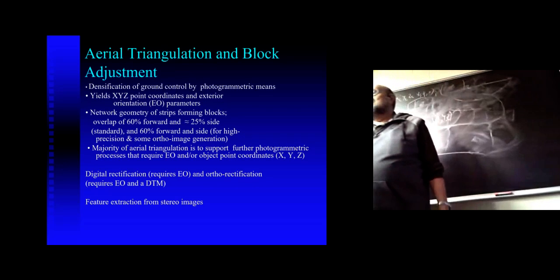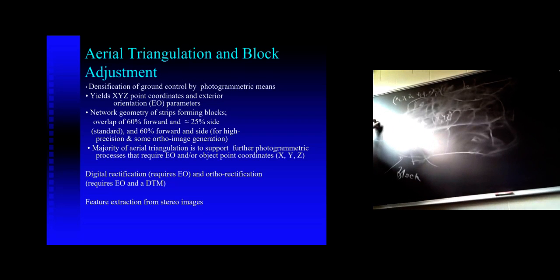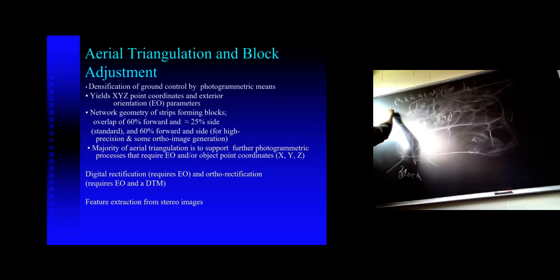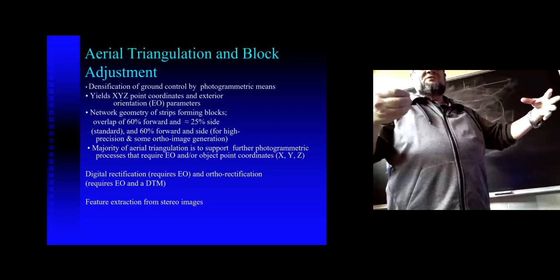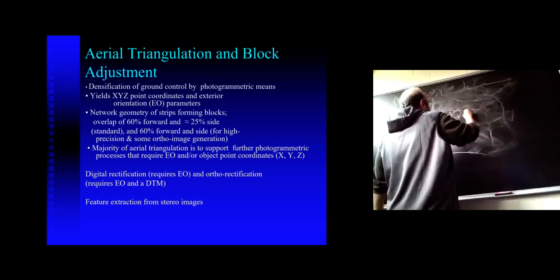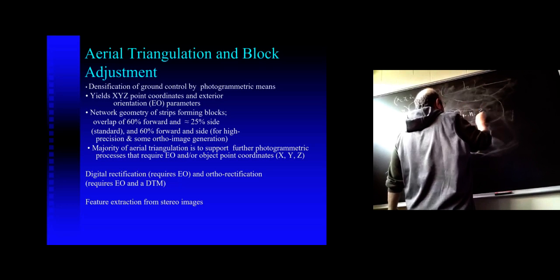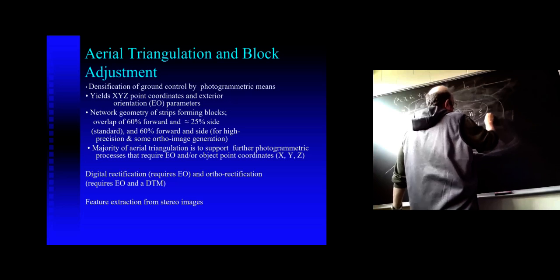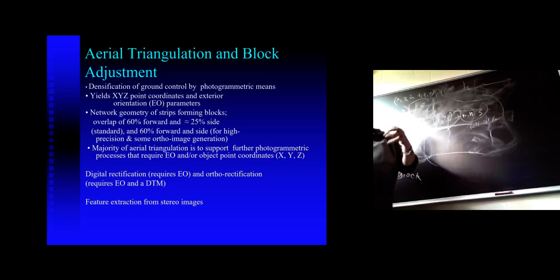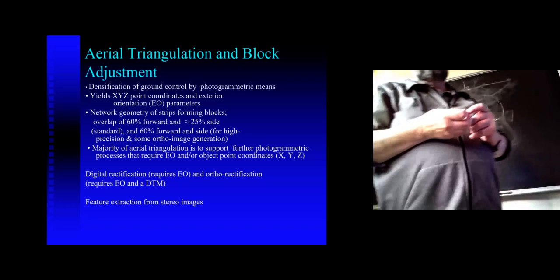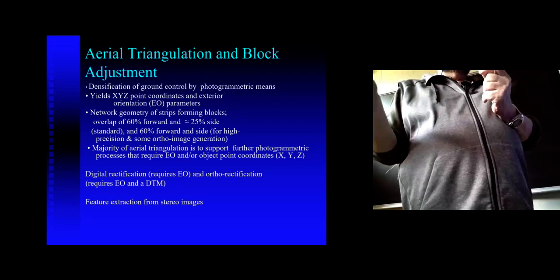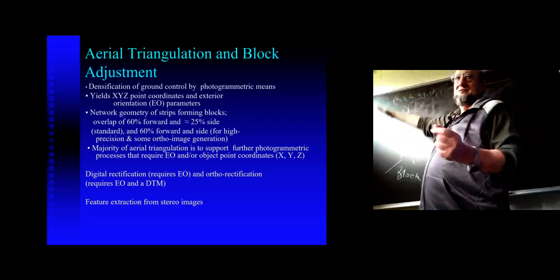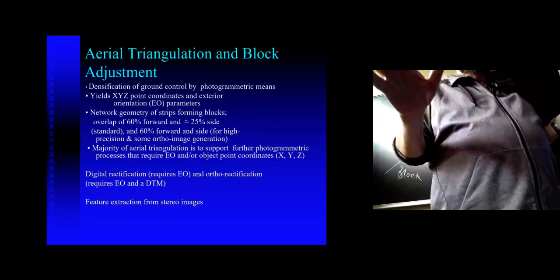There are also cases where you want to include interior orientation elements — f, x₀, y₀ — and this is called self-calibration. If you include these parameters, you add m × n × 3 more unknowns. You also make corrections to the elements of exterior orientation. In your adjustment courses you resolved for two or three points; now you resolve for potentially millions of points, but the solution is the same: least squares adjustment.